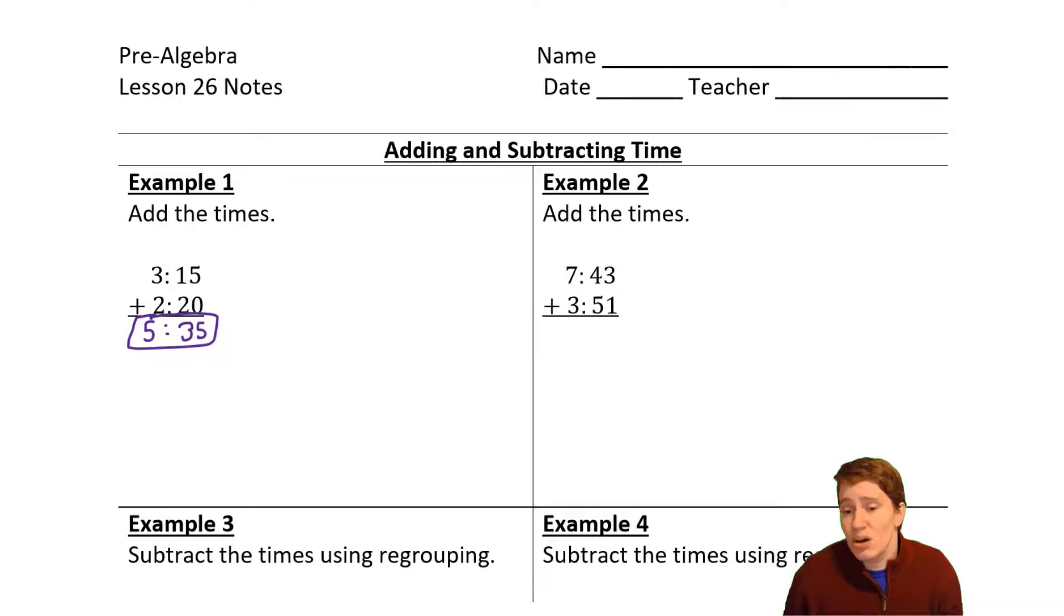And on the second one, we are going to have to regroup, right? So 43 plus 51 ends up being 94. Since that's bigger than 60, what we're going to do is subtract 60 to see what's left over. And because we're taking a 60 out of this, we're taking an hour out, we're going to carry a one to our hours.